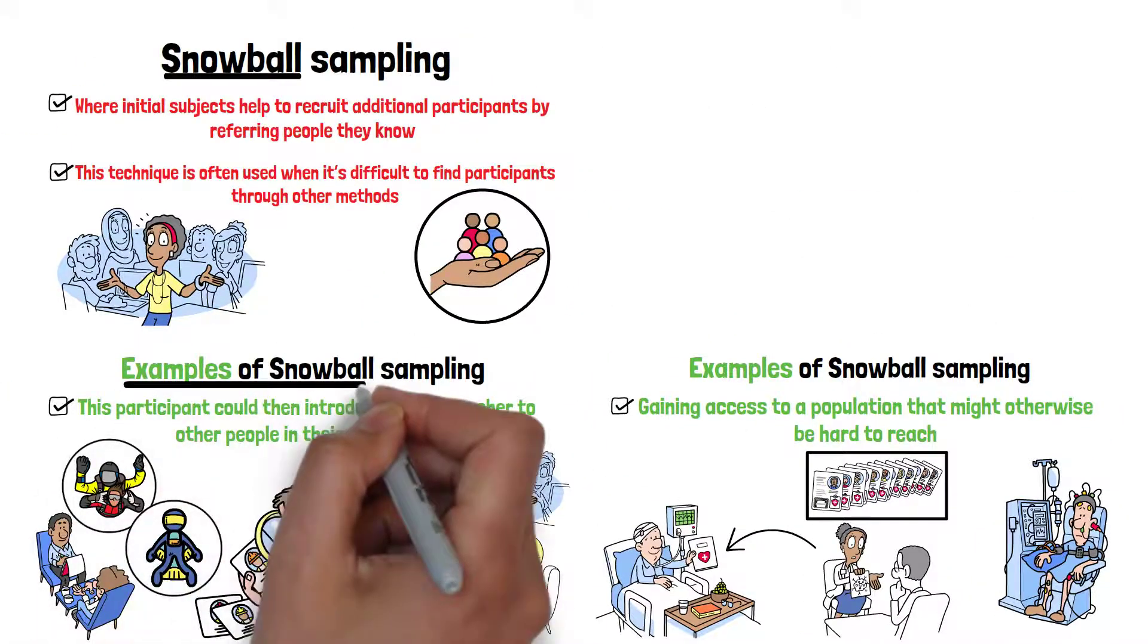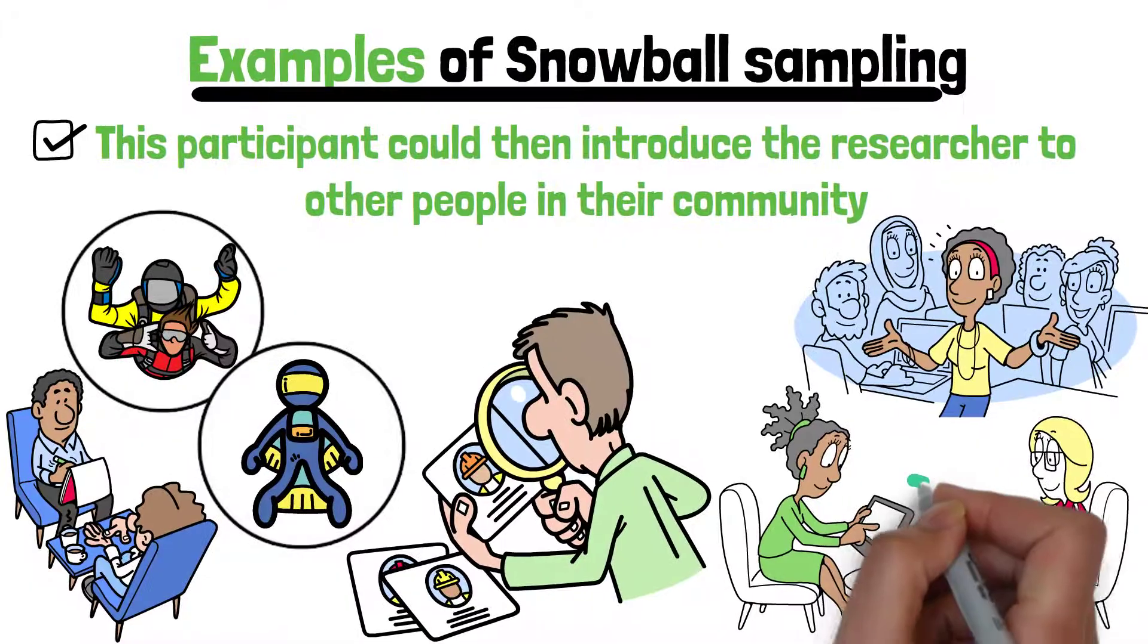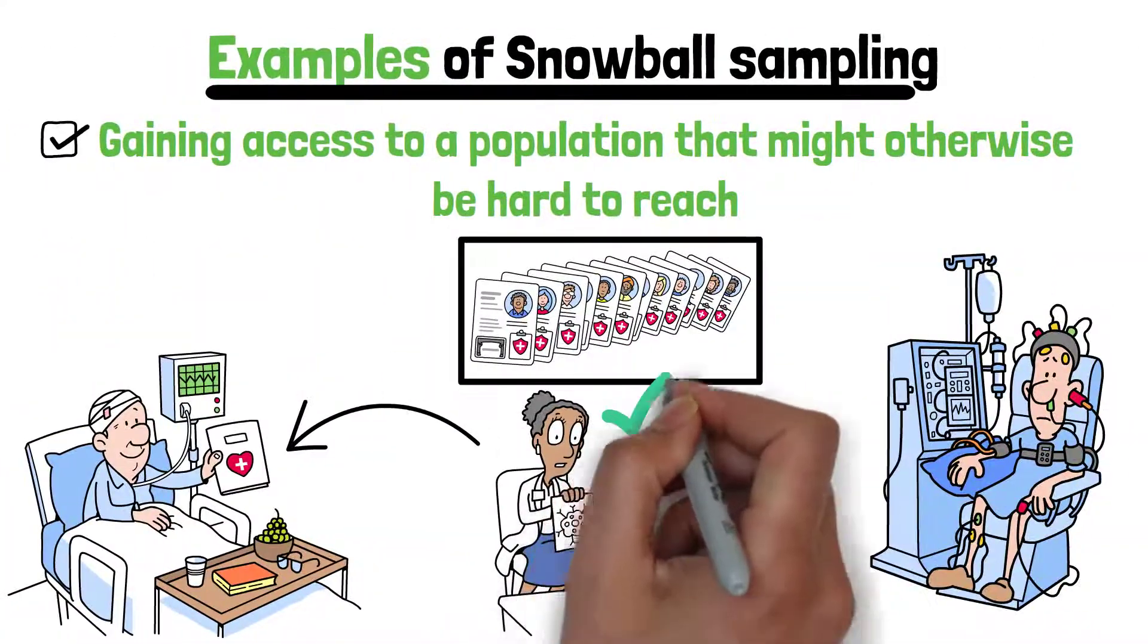Both examples show how snowball sampling can be effective when researching specialized or hard-to-reach groups, as participants themselves help the researcher find more subjects.